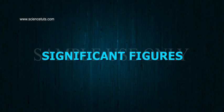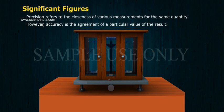Significant Figures. Precision refers to the closeness of various measurements for the same quantity. However, accuracy is the agreement of a particular value of the result.